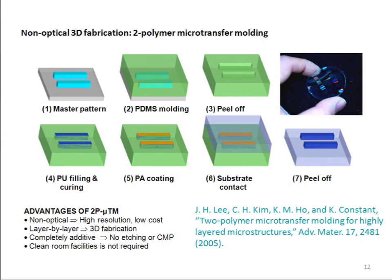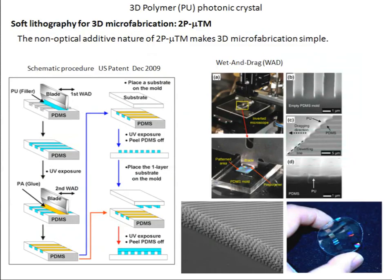The idea is to fabricate the structure in a layer-by-layer fashion. You start with a master pattern, then you do an elastomer mold of that — you pour liquid on, cure the elastomer, and peel it off to get a mold. With this mold you can fill in with other polymers and cure the polymer. The surface properties of the different polymers are adjusted so that the meniscus is flat, giving high structural fidelity. You then put glue onto the system and transfer it to a substrate, and this process can be repeated layer by layer to build up structures that are many layers high.